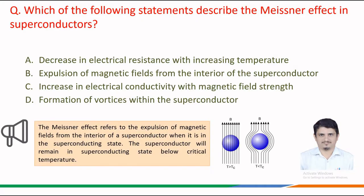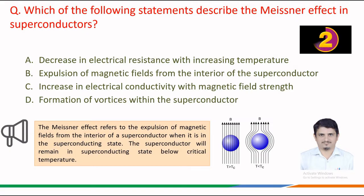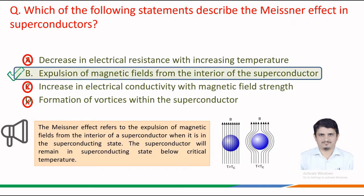To answer this question, we must remember the Meissner effect refers to the expulsion of magnetic fields from the interior of the superconductor when it is in the superconducting state. The superconductor remains in the superconducting state below a certain critical temperature. Therefore, the correct answer is option b — expulsion of magnetic fields from the interior of the superconductor.